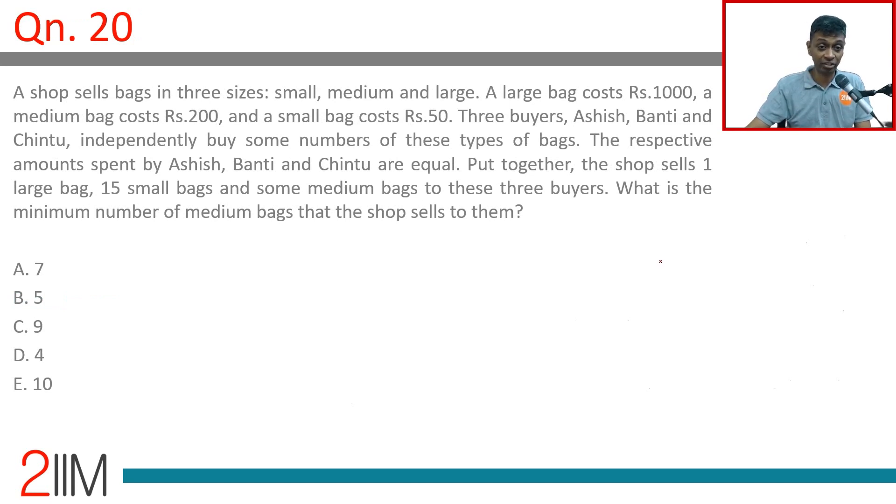A shop sells bags in three sizes: small, medium, and large. A large bag costs Rs. 1000, a medium bag costs Rs. 200, and a small bag costs Rs. 50. Three buyers—Ashish, Banti, and Chintu—independently buy some number of these types of bags. The respective amounts spent by Ashish, Banti, and Chintu are equal. Put together, the shop sells one large bag, 15 small bags, and some medium bags to these three buyers.